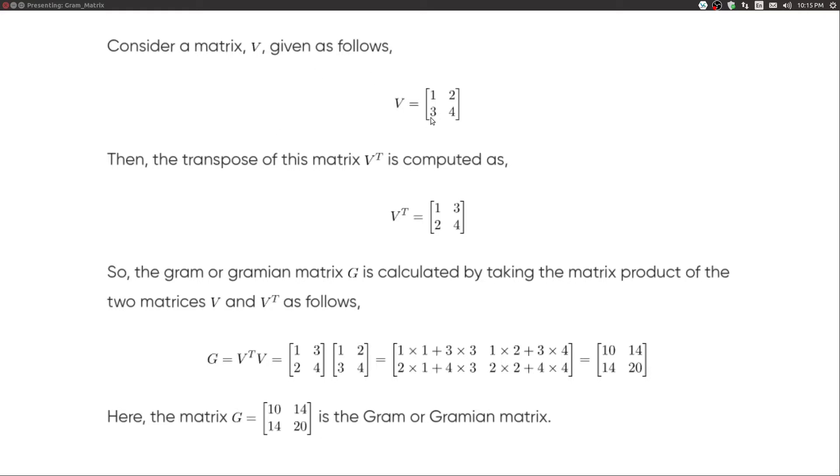V is [1 2; 3 4], a 2x2 matrix of two rows, two columns. Then the transpose of this matrix V^T is computed by transposing the rows and columns, so one three goes to the top and two four comes down, and that's what we have as the transpose.